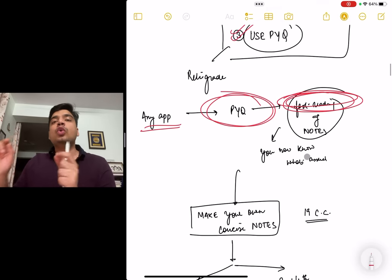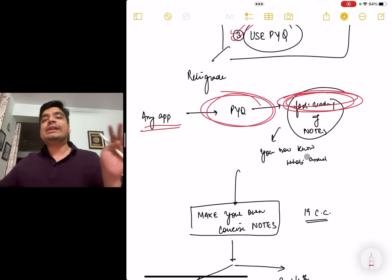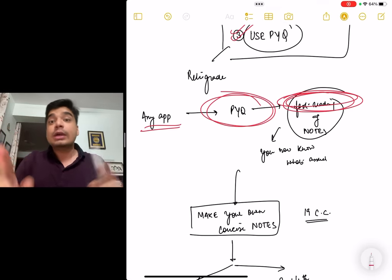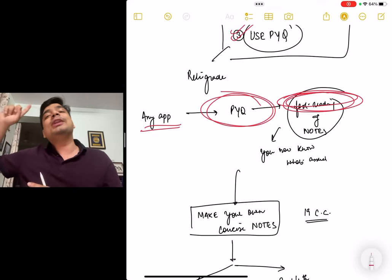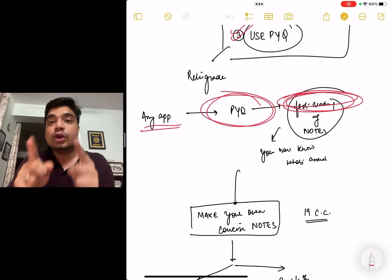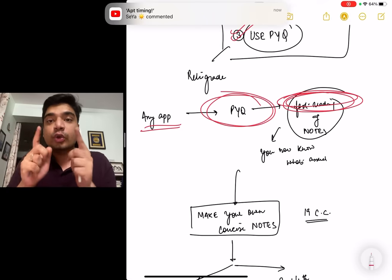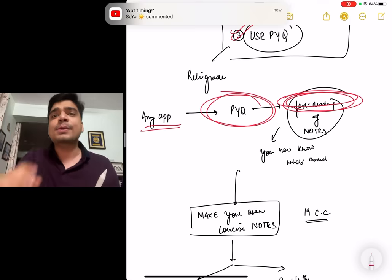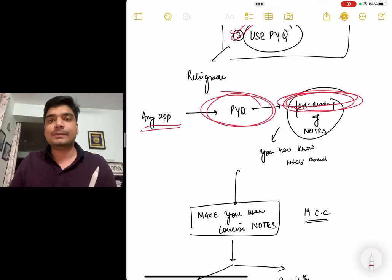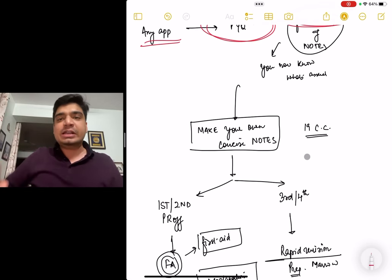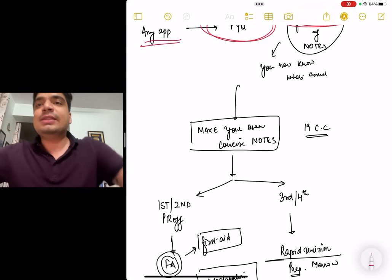That is the importance of making notes. You have to make your own handwritten notes. Make your own concise notes for 19 subjects. Next two months, just dedicate to doing this process and making notes. The next two months will be spent on remembering those notes and rectifying those notes. Since you would have made them in your own handwritten, they would be your own handwritten notes. You will be able to revise them, memorize them, and revise them in the last 10 days.